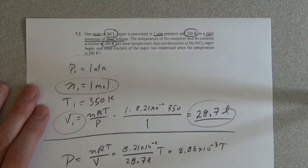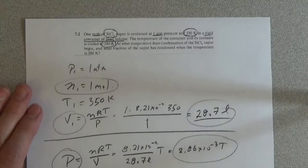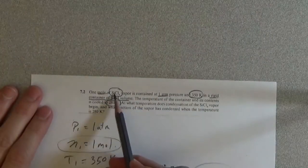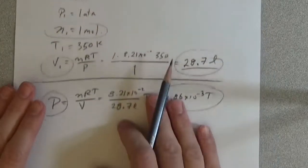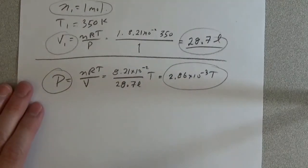So now we've got the pressure as a function of temperature, but then we also have the equilibrium relationship between pressure and temperature. And this is for SiCl4, and going to the table in the appendix of your book.